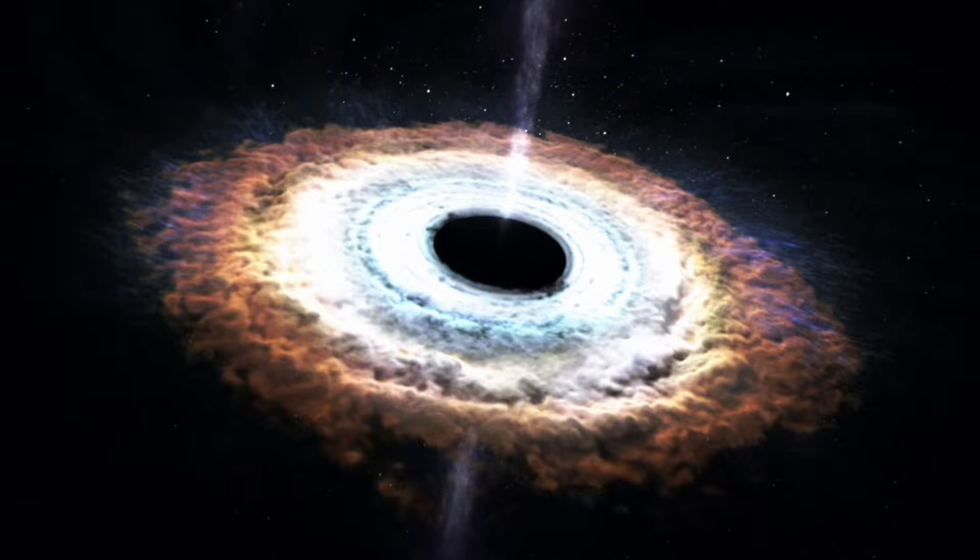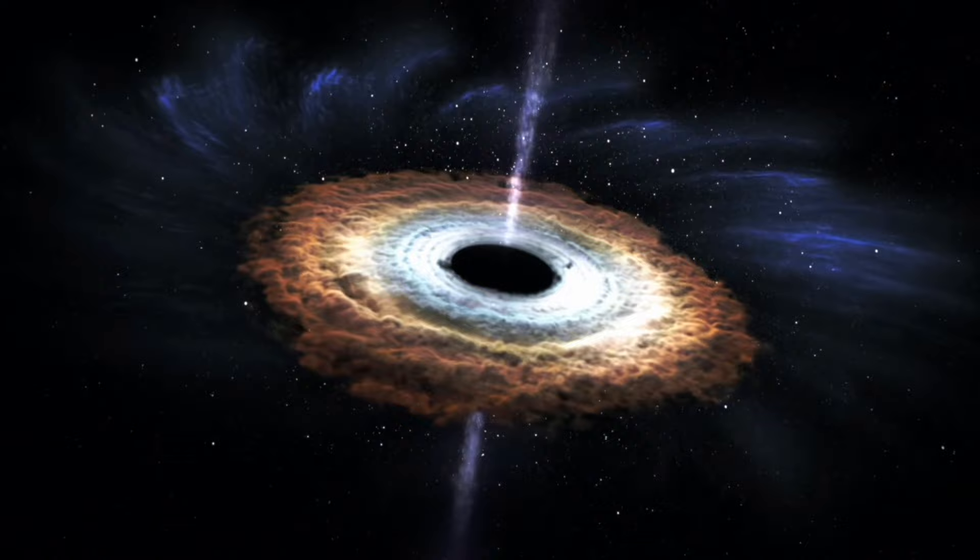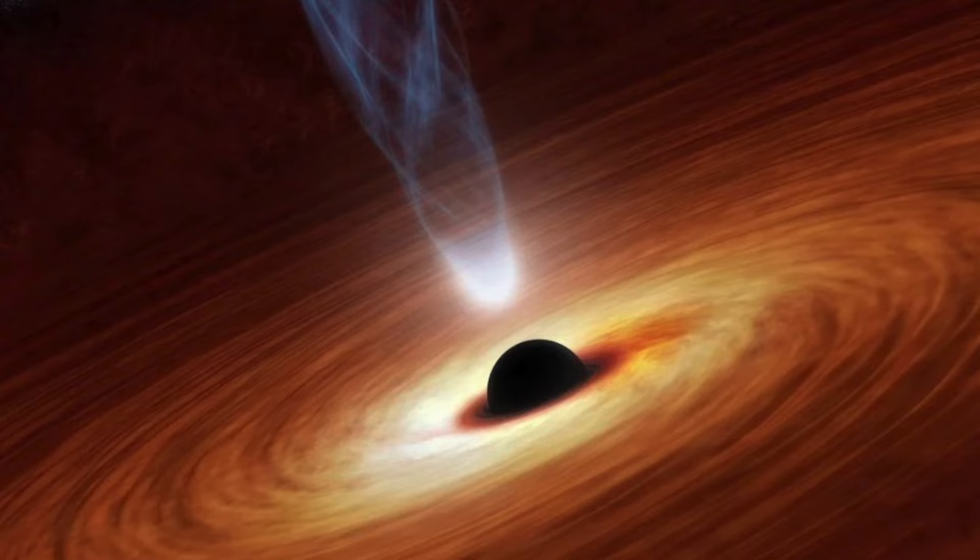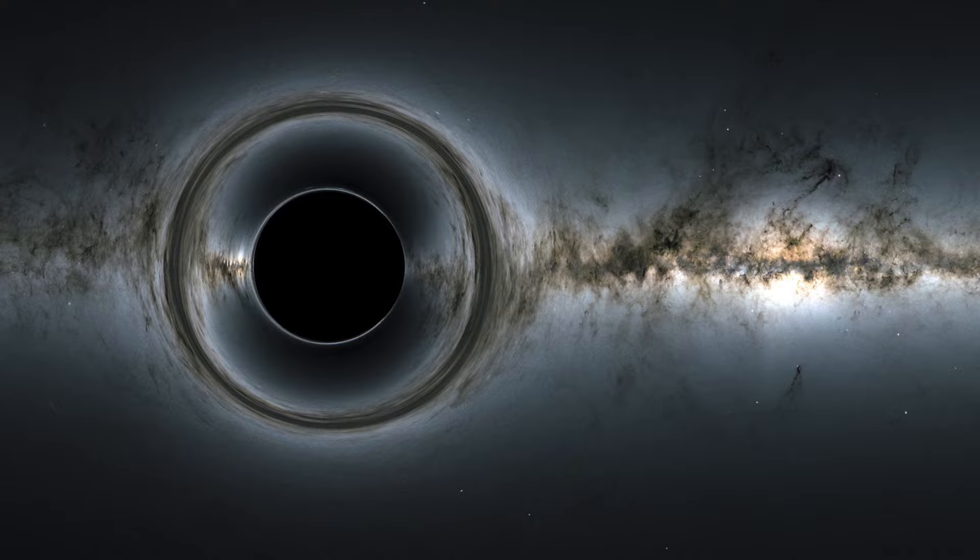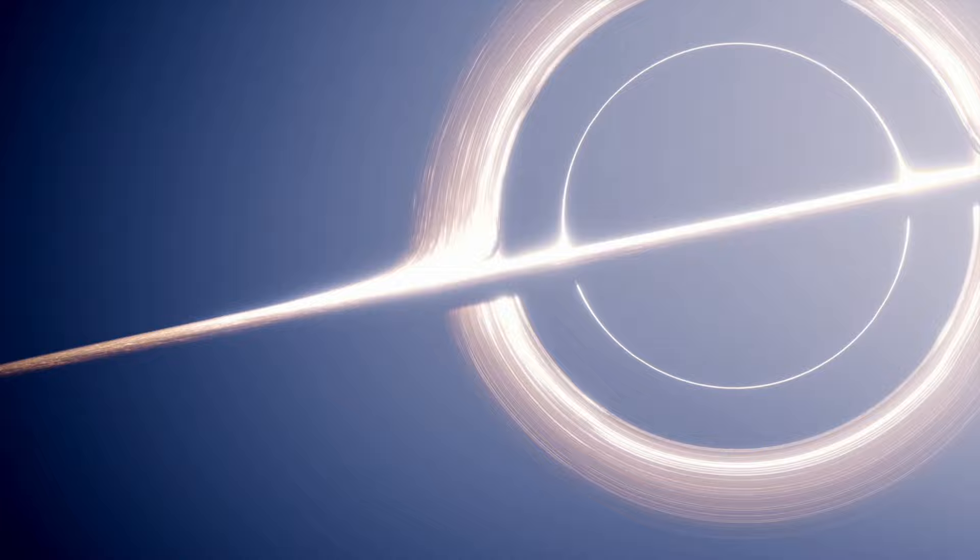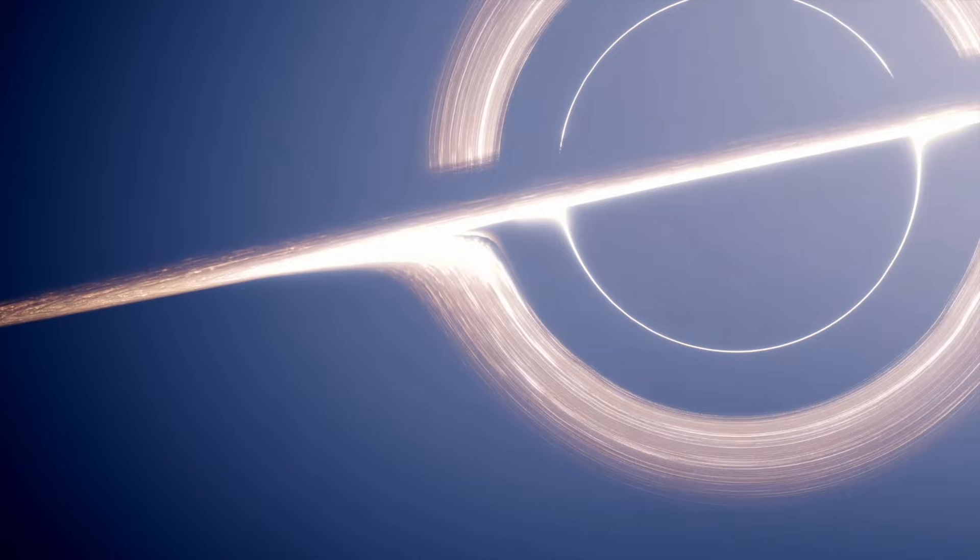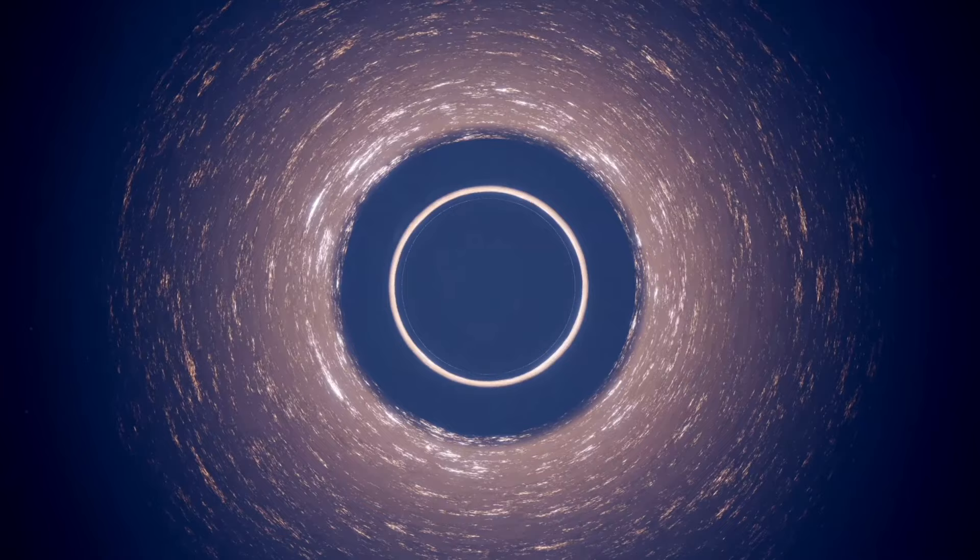This image offers an overall angular dimension of 51.8 plus or minus 2.3 micro-arcseconds. Translated to a distance of 26,000 light-years, or 8,000 parsecs, this corresponds to a diameter of about 51.8 million kilometers, or 32.2 million miles. To provide context, Earth orbits about 150 million kilometers, or 93 million miles, away from the Sun, while Mercury, at its closest point, is around 46 million kilometers, or 29 million miles, distant.